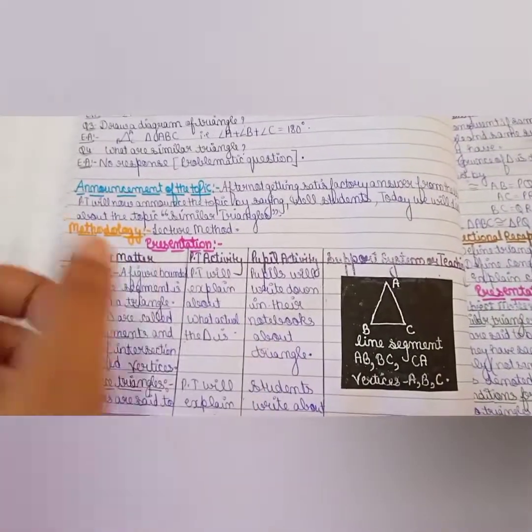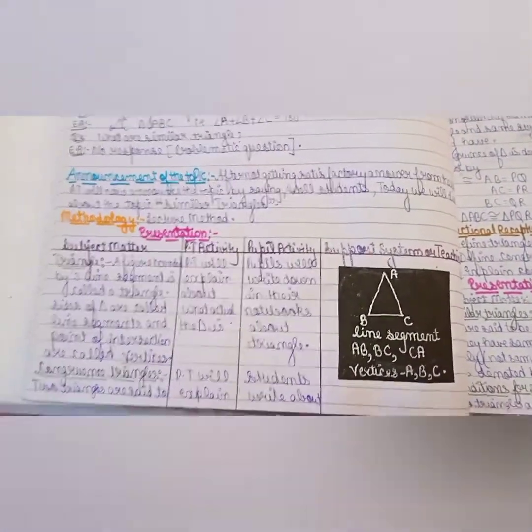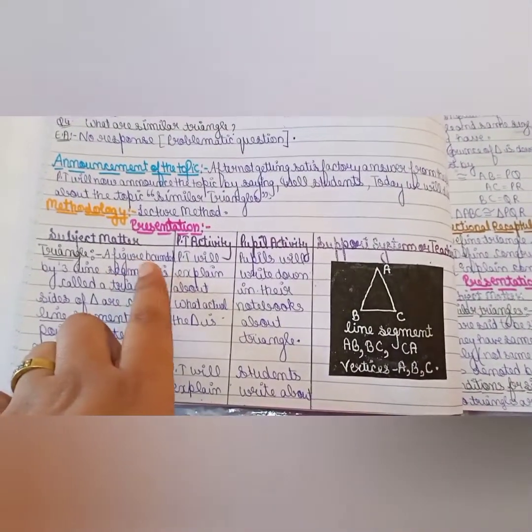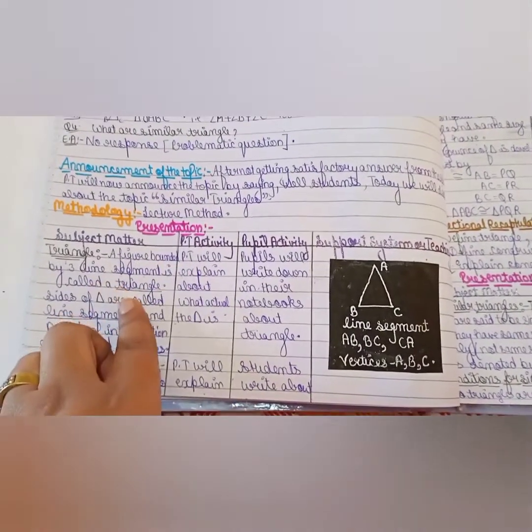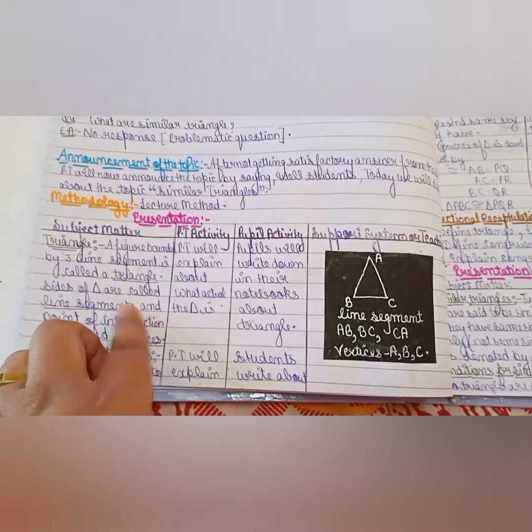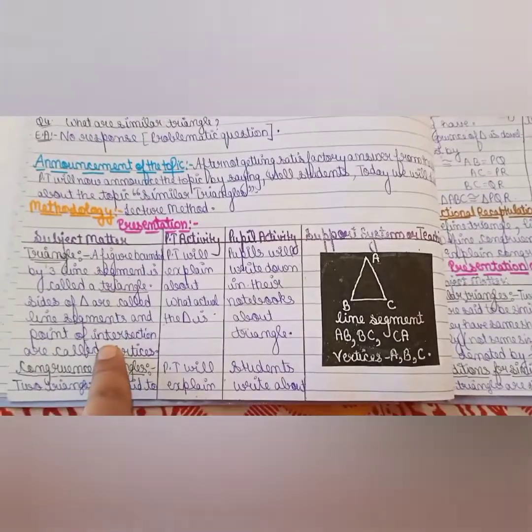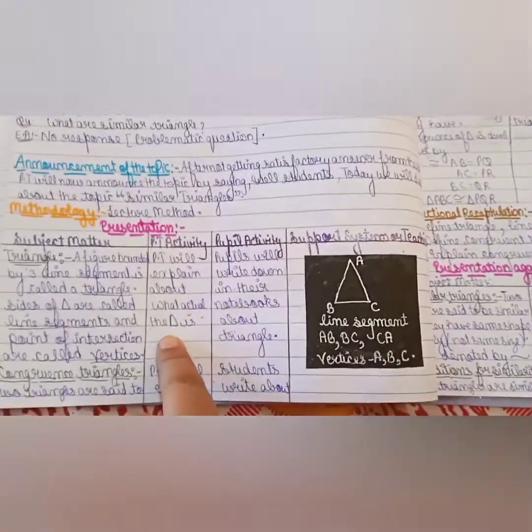In Maths, we know that blackboard is used. First, we are studying what is the subject matter: Figure bounded by 3 line segments which is called triangle. Sides of triangles are called line segments. This is all about triangle.